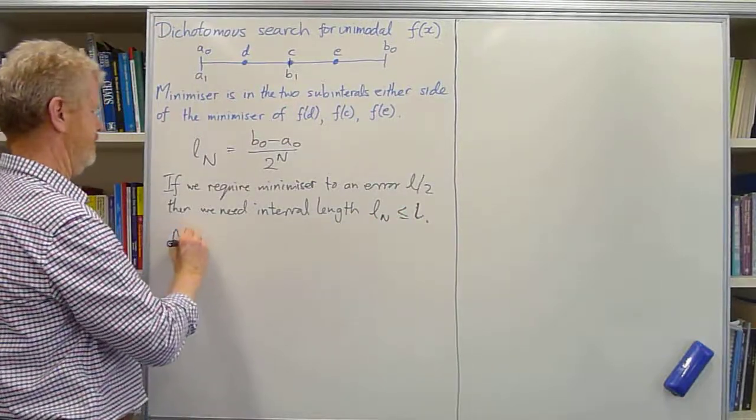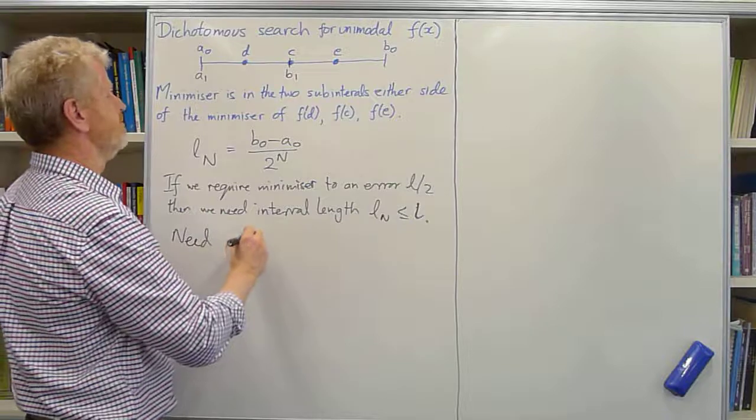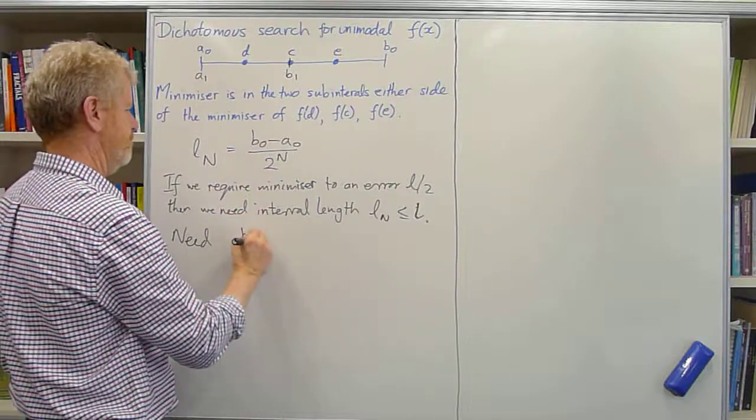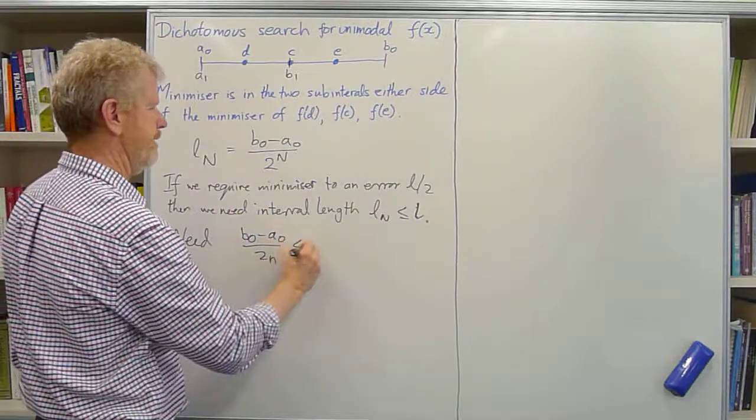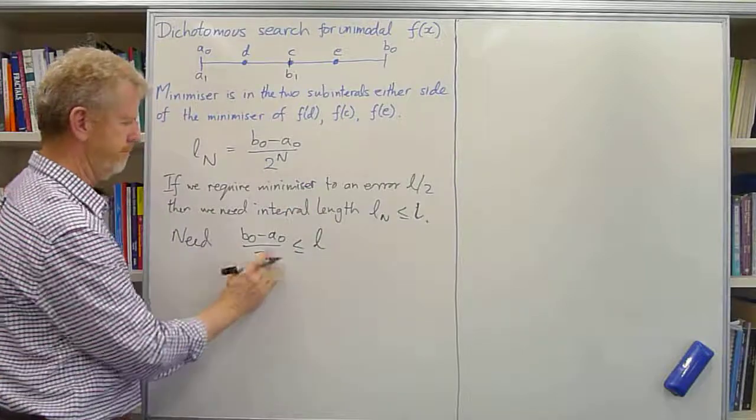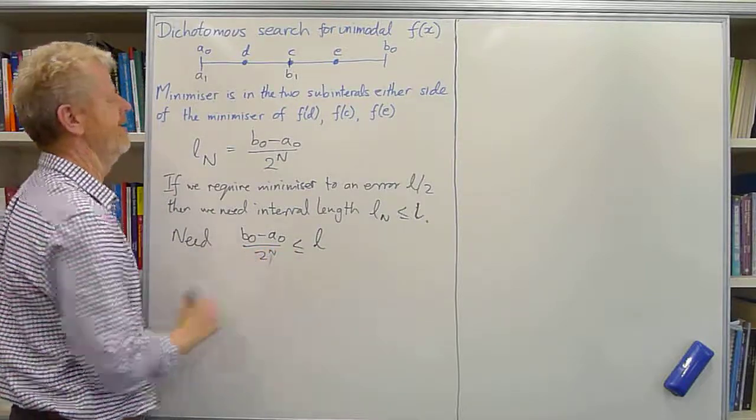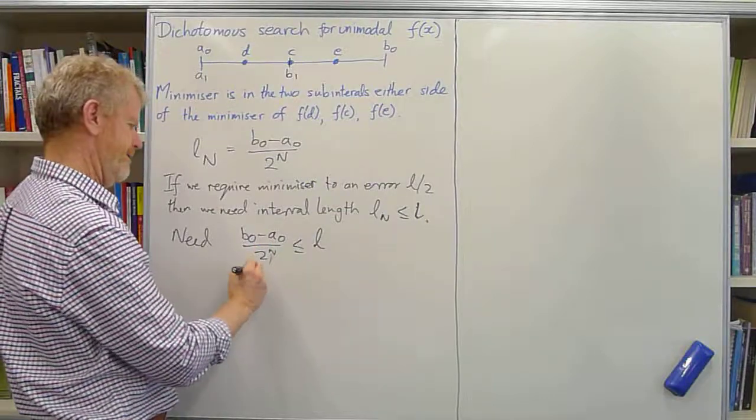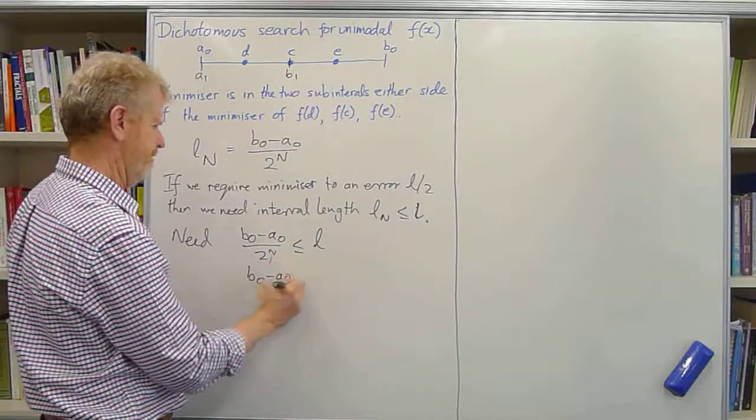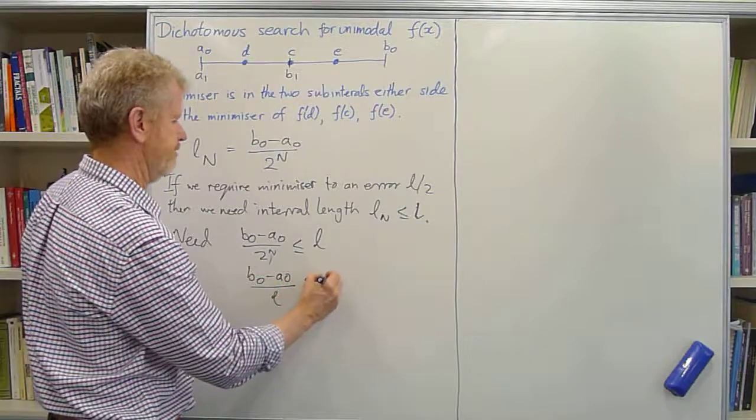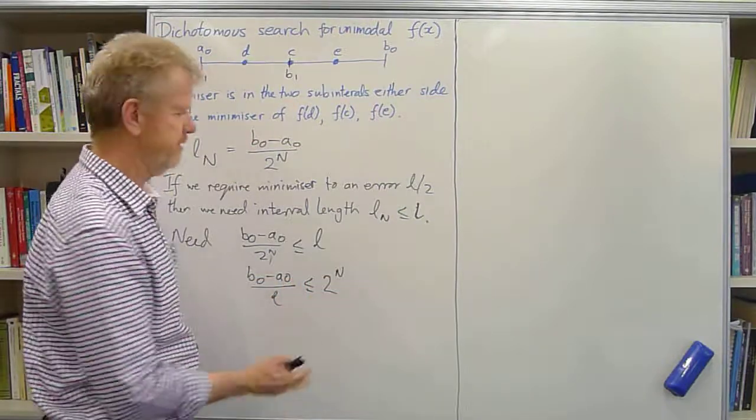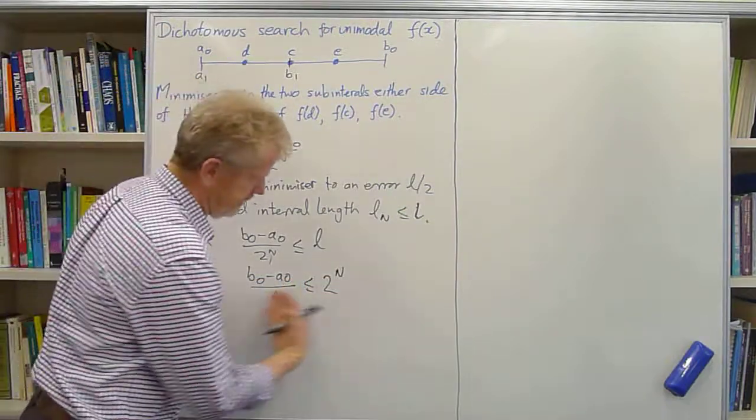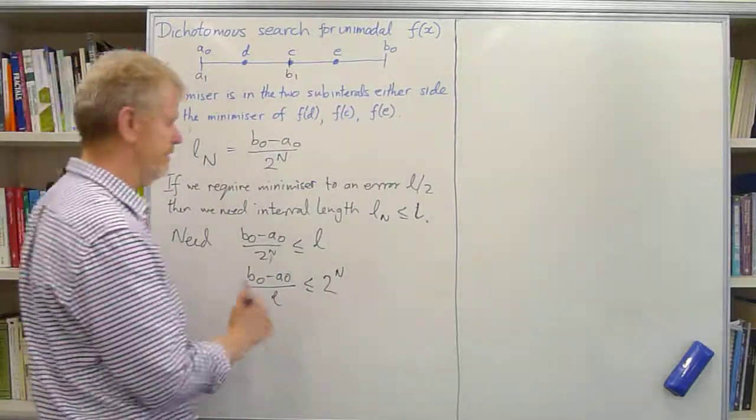So we need ln, which is b0 minus a0 over 2 to the n, to be less than or equal to l. Divide by l, multiply by 2 to the n. So that's b0 minus a0 over l is less than or equal to 2 to the n. And they're both positive, so that's fine.